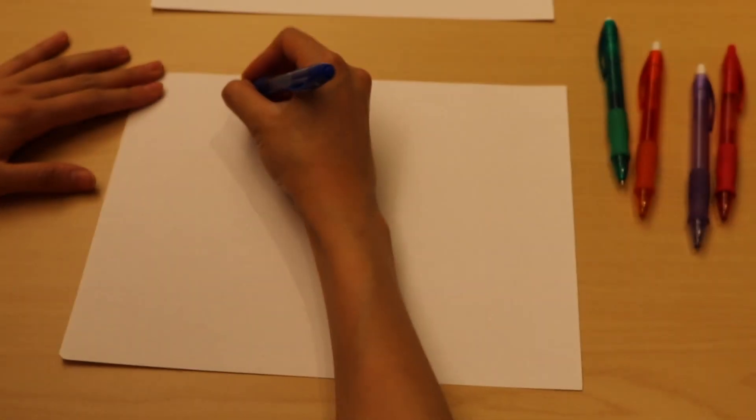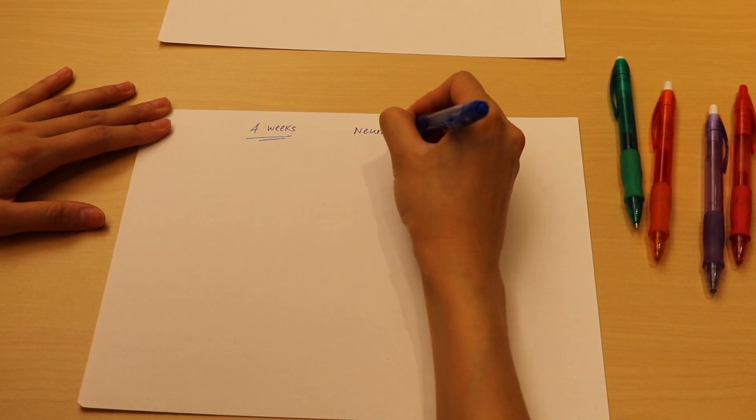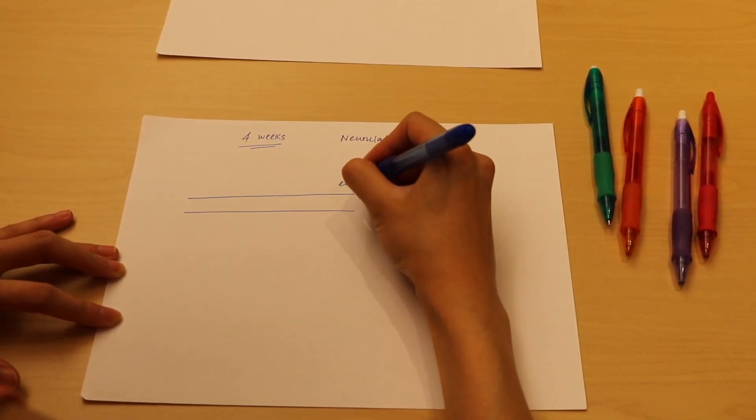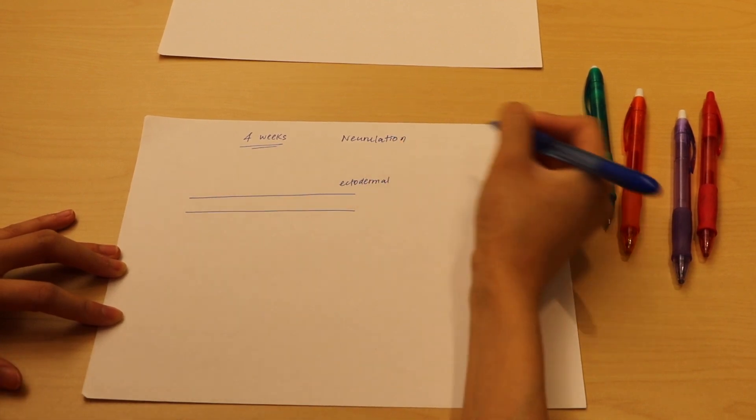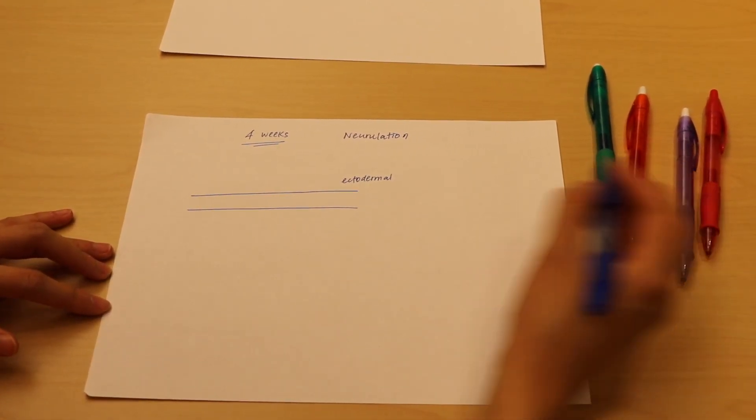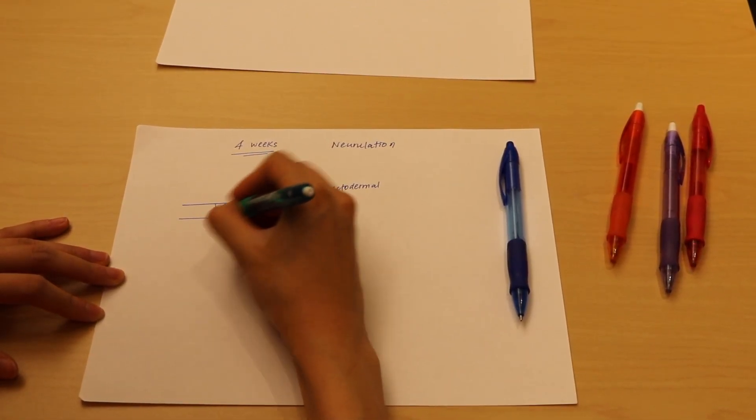I'm going to fast forward to around four weeks post-conception, where something called neurulation takes place. So this is our ectodermal layer, and it begins to thicken and flatten. Essentially, the neural plate begins to arise as a structure within the ectodermal layer.